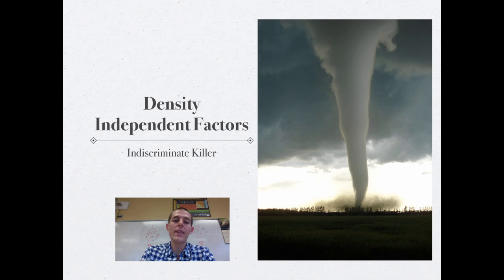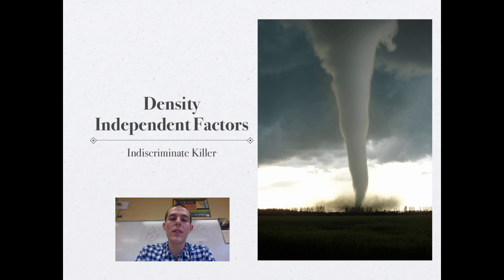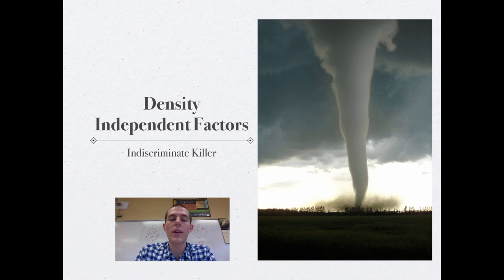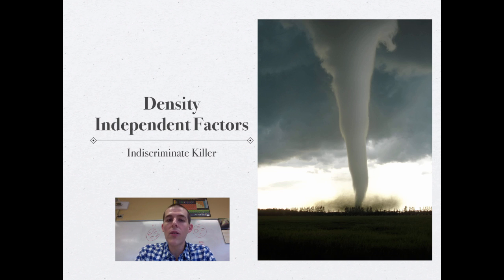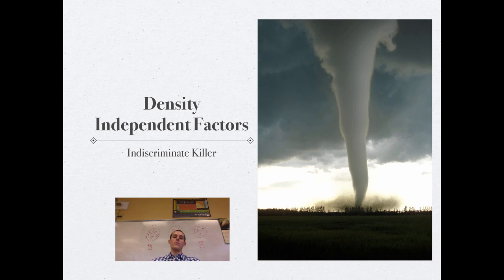Density independent factors limit the size of a population regardless of how many individuals are living together. The best examples are natural disasters like tornadoes, hurricanes, typhoons, and earthquakes — a tornado is going to happen whether there are 100,000 people in its path or 5,000 people in its path.